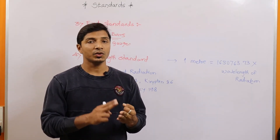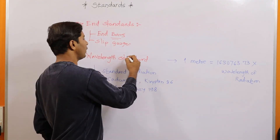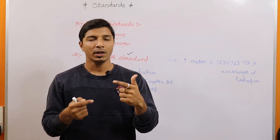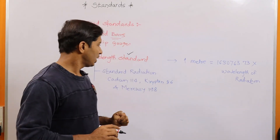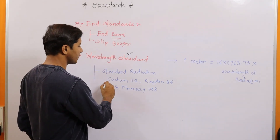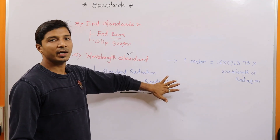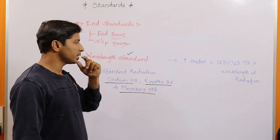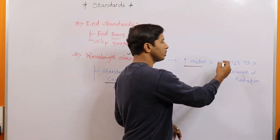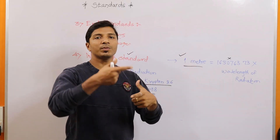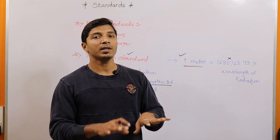These are basically the three major standards used for measurement in metrology. Additionally, a fourth type is wavelength standards. These standards are useful to measure the length of waves emitted by different light sources. These are not physical standards, so they need not be maintained or preserved. The standard components considered are cadmium-114, krypton-86, and mercury-196. These radiations are considered standard radiation or wavelength standards. There is a conversion where 1 meter equals the wavelength of radiation of these standard elements multiplied by a specific factor, to measure the length of waves.